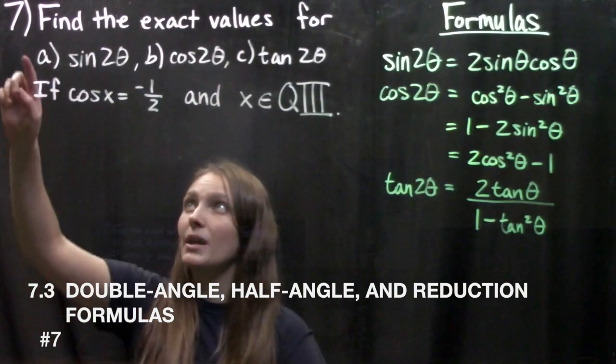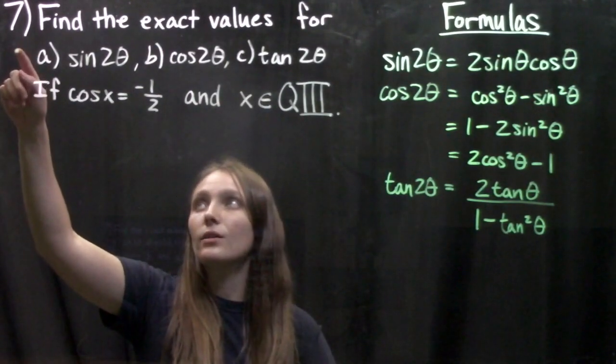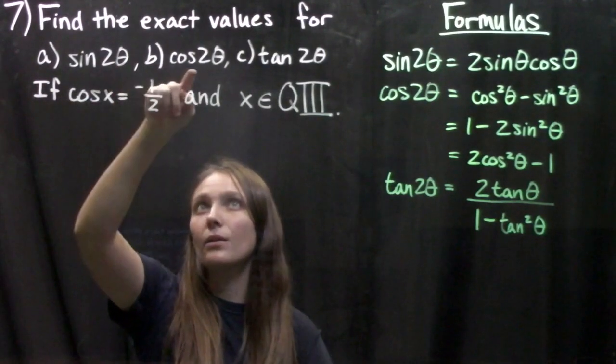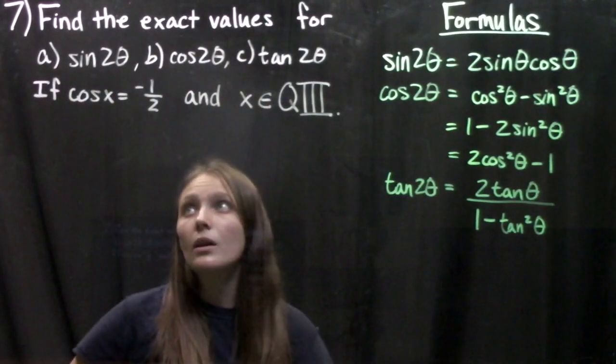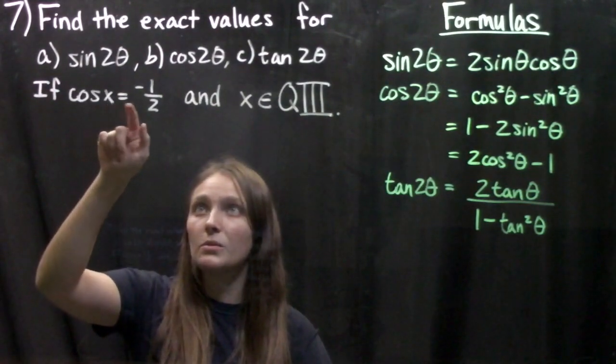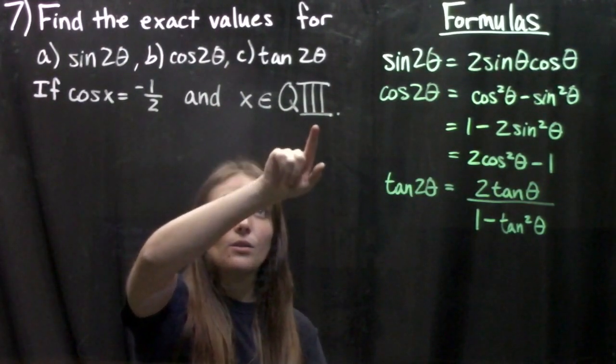In this video we're going through number 7 which says find the exact values for sine of the double angle, cosine of the double angle, and tangent of the double angle if cosine of x equals negative half and x is in the third quadrant.